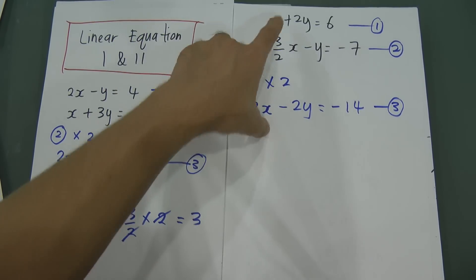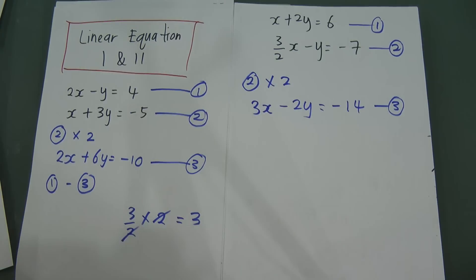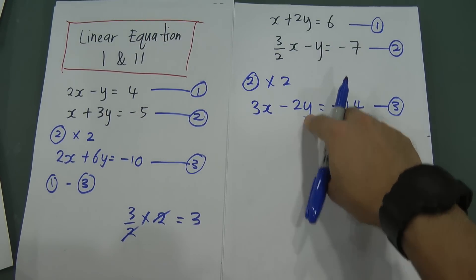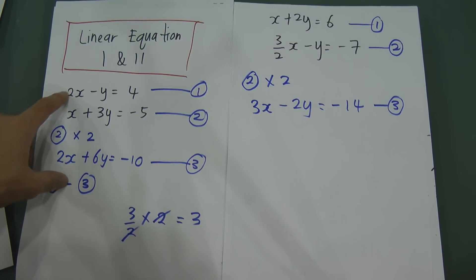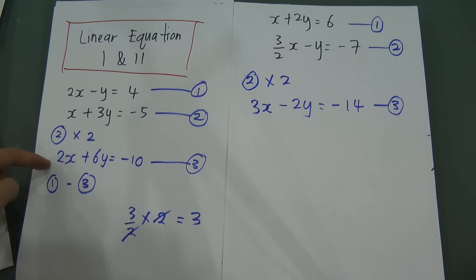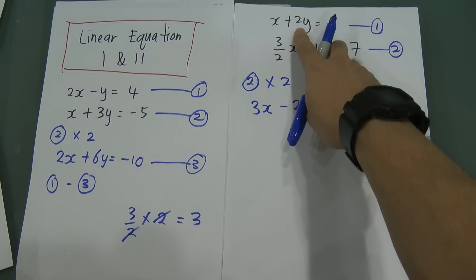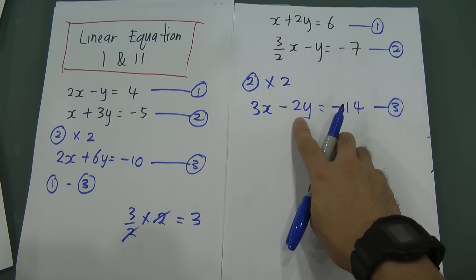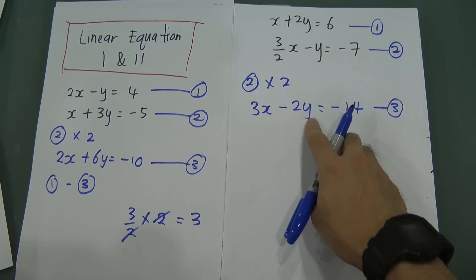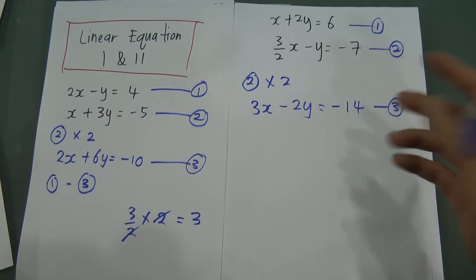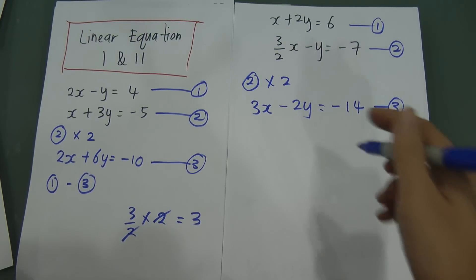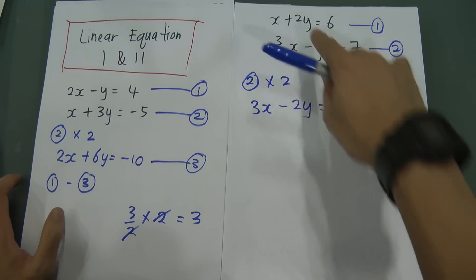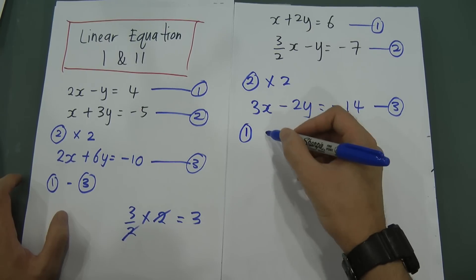Now both equations have 2y. You have to decide whether to use minus or plus. In the first equation we have positive 2y, and in the third equation we have negative 2y. If you do positive 2y minus negative 2y, minus negative becomes plus, giving 4y — you cannot delete y that way. So you have to use plus to delete y. I use equation 1 plus equation 3.